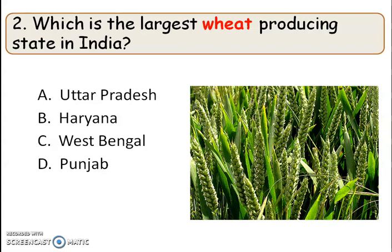Second question: which is the largest wheat producing state in India? The right answer is option A, Uttar Pradesh. Uttar Pradesh is the largest wheat producing state in India.